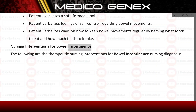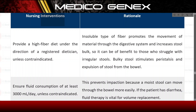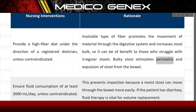Nursing interventions for bowel incontinence. Provide a high-fiber diet under the direction of a registered dietitian, unless contraindicated. Insoluble fiber promotes the movement of material through the digestive system and increases stool bulk, benefiting those with irregular stools. Bulky stool stimulates peristalsis and expulsion of stool from the bowel. Ensure fluid consumption of at least 3000 ml a day, unless contraindicated, to prevent impaction since a moist stool moves through the bowel more easily. If the patient has diarrhea, fluid therapy is vital for volume replacement.